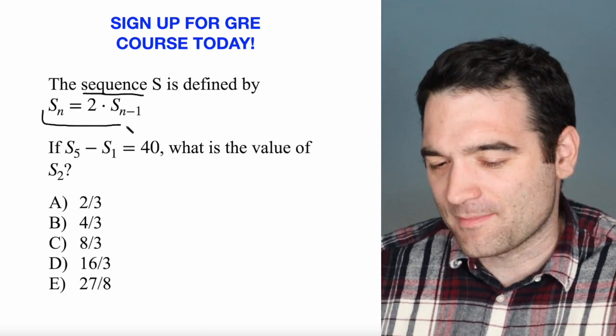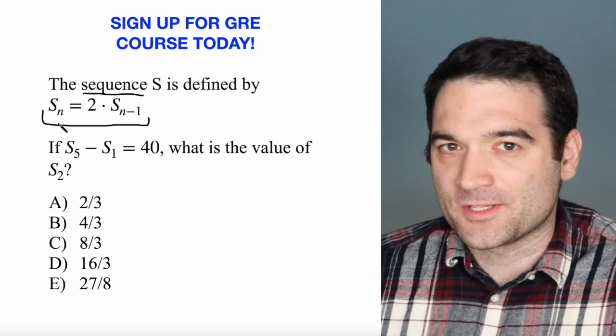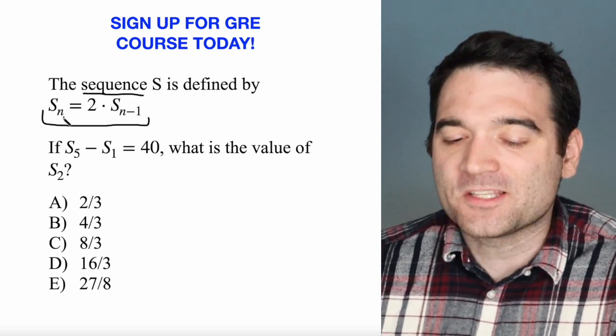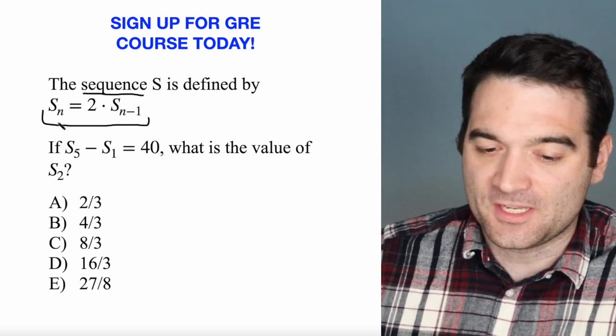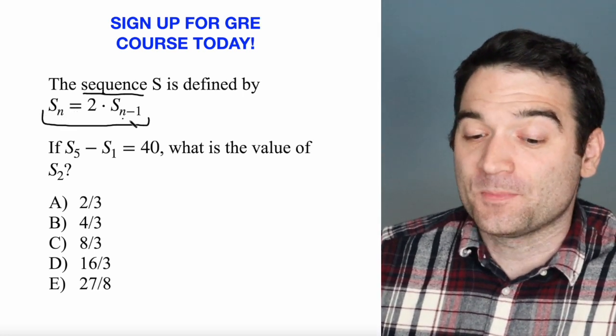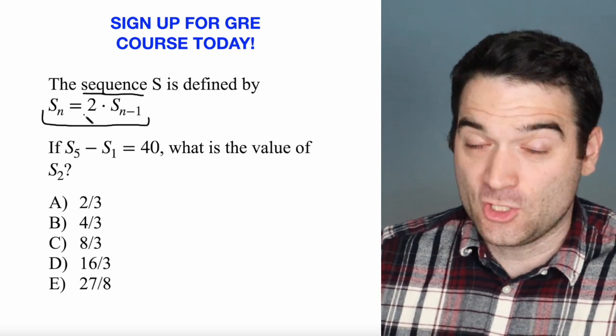Let's look at this statement right here. This describes a sequence or a pattern. And what it's saying is that to find the next number in the sequence, what you have to do is multiply the previous number by 2.